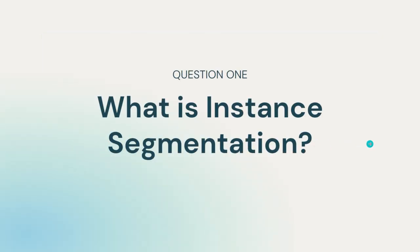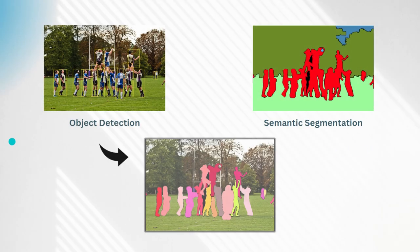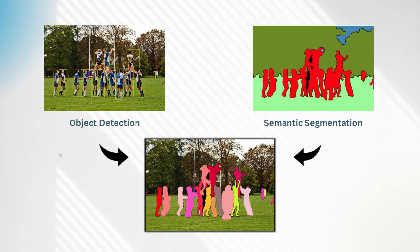What exactly is instance segmentation? In computer vision, there are three somewhat similar types of tasks. There's more than that, obviously, but these three are related to what we're working on: object detection, semantic segmentation, and instance segmentation.